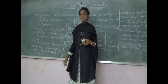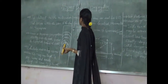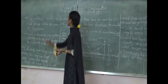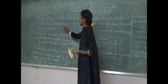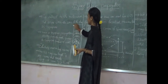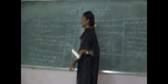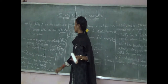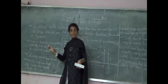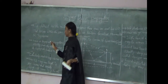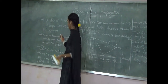First of all, we will learn about the definition of space wave propagation. It is defined as radio waves that are within the 20 kilometers of the atmosphere. This is called space wave propagation and it is also known as tropospheric propagation.